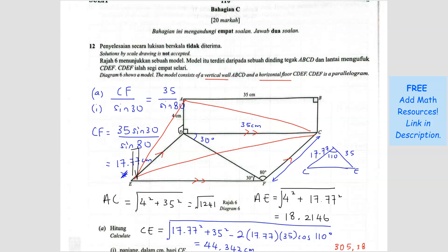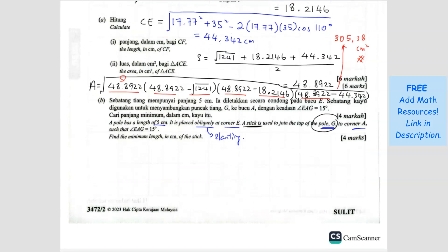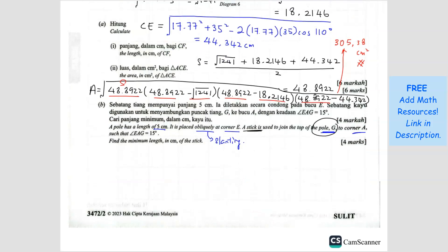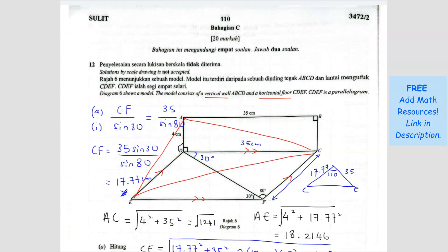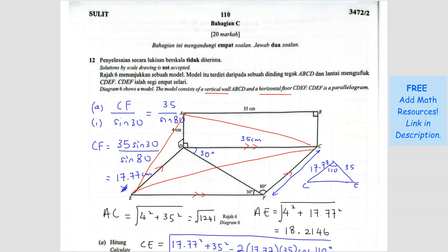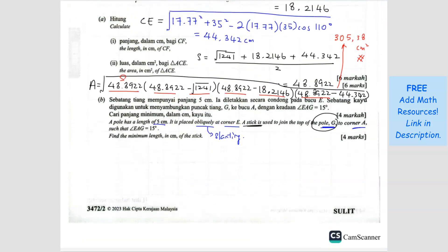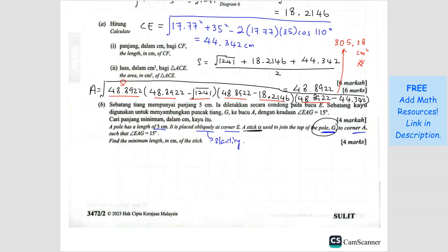They ask us to find the minimum length of the stick. The stick is connecting from G to A. So let me redraw this. From a side view, if I look at the side, we can see this.